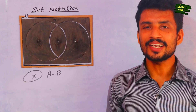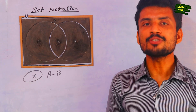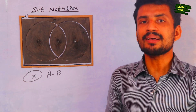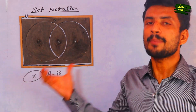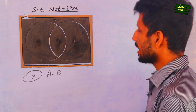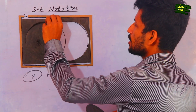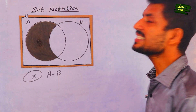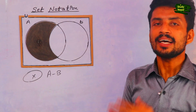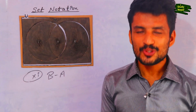The tenth topic is A minus B — the difference of A and B. It means we have to remove the portion of B from set A. Whatever remains purely in A is the answer. So we remove the B portion from A, and the remaining pure portion of A shown in the Venn diagram is the answer of A minus B.